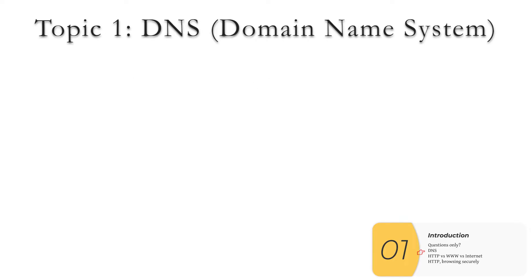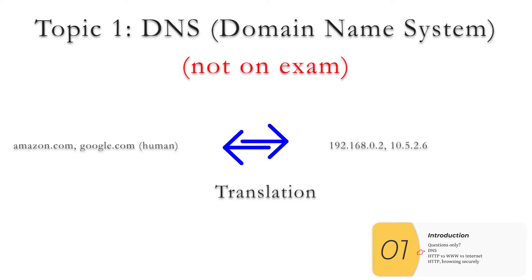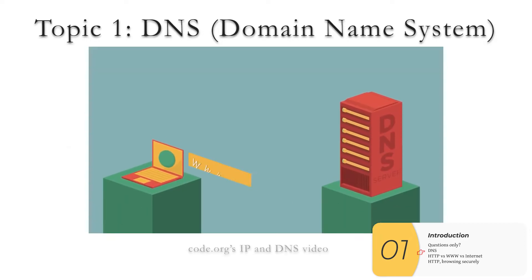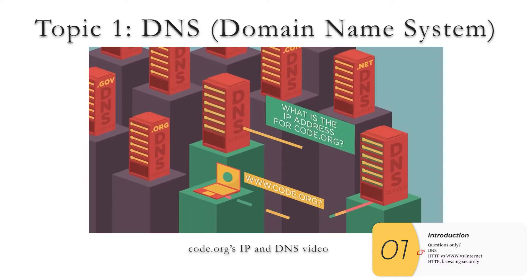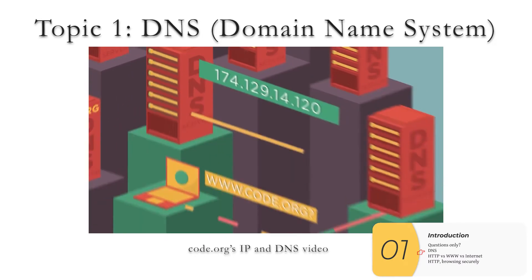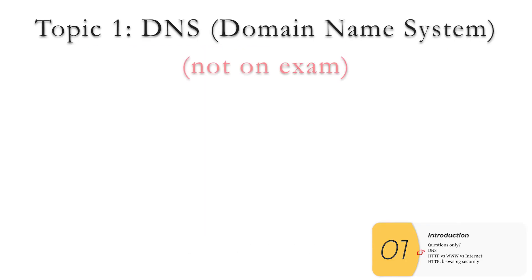Topic one is DNS, which stands for Domain Name System. This is not on the exam anymore — it used to be in the past, but no longer. The basic idea is that we humans think of things like Amazon.com and Google.com, but computers think of these things in terms of numbers, so we need a translation system to go back and forth. It's an important topic if you go into IT, but it won't be on the exam.